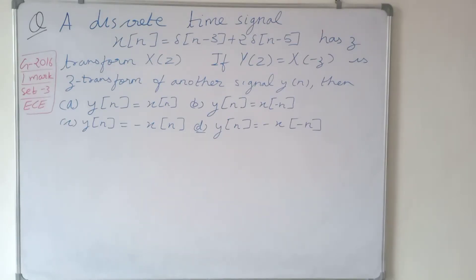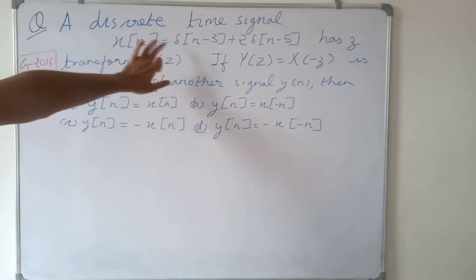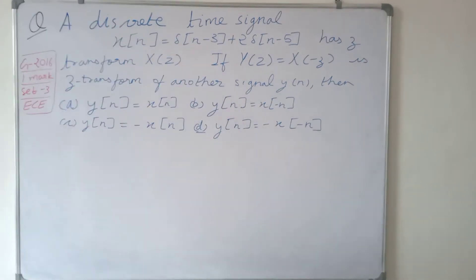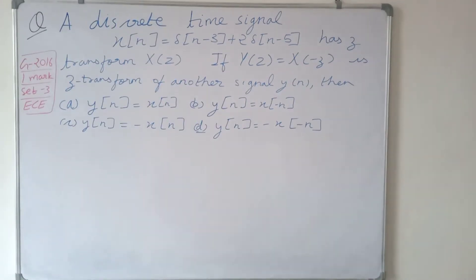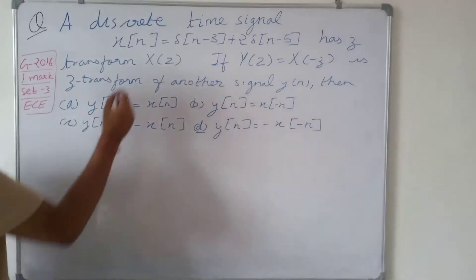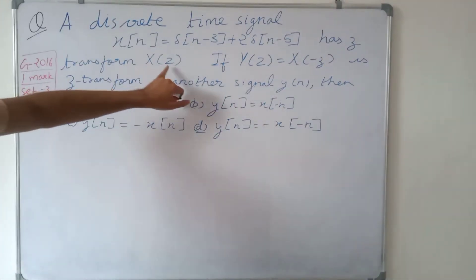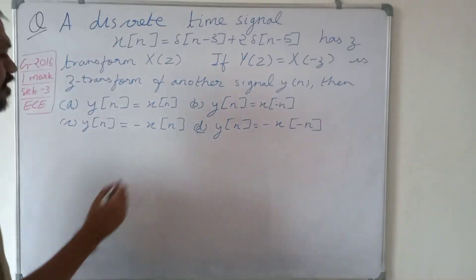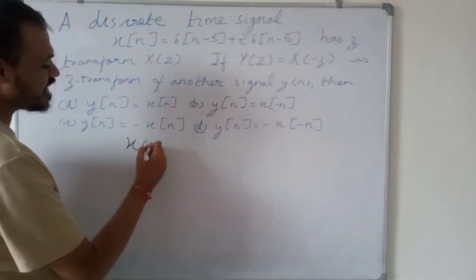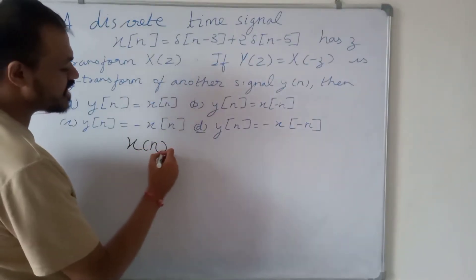We are solving a question from GATE 2016. The discrete time signal x of n is given as x of n equals delta of n minus 3 plus 2 delta of n minus 5. This signal has Z-transform X of z.